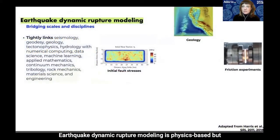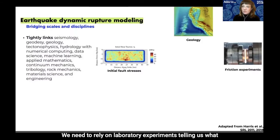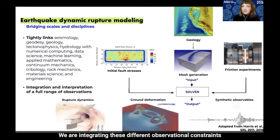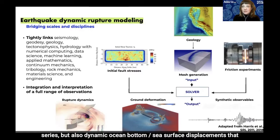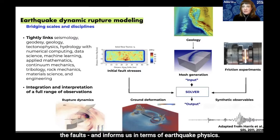Earthquake dynamic rupture modeling is physics-based but requires initial conditions that we can constrain from a variety of geophysical data. For example, we need information from geology given in the form of high-resolution topography or bathymetry and complex 3D images of the subsurface. We rely on laboratory experiments telling us how the friction response of faults behaves during earthquake rupture propagation, and we need to prescribe the loading and strength of the faults in our models. We integrate these observational constraints into a computational model solving for frictional failure across prescribed fault surfaces, and we can generate synthetic seismograms, synthetic geodetic time series, and sea surface displacements to initiate tsunami models.